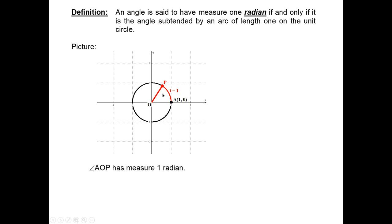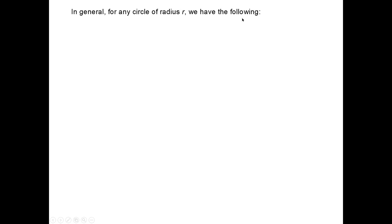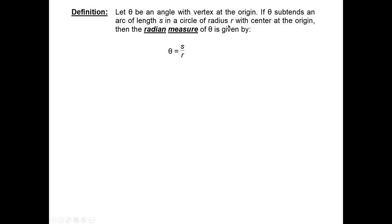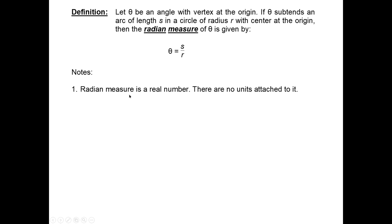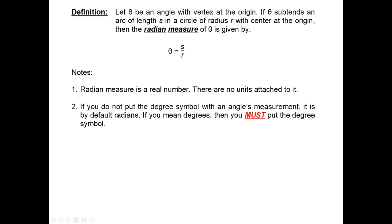One radian is not quite 90 degrees, but more than 45 degrees. In general, for any circle of radius r: let θ be an angle with vertex at the origin. If θ subtends an arc of length s in a circle of radius r, then the radian measure of θ is θ = s/r. Notice — arc length divided by radius — since both are measured in the same units, the units cancel, making θ a real number. Without the degree symbol, an angle is measured in radians by default.